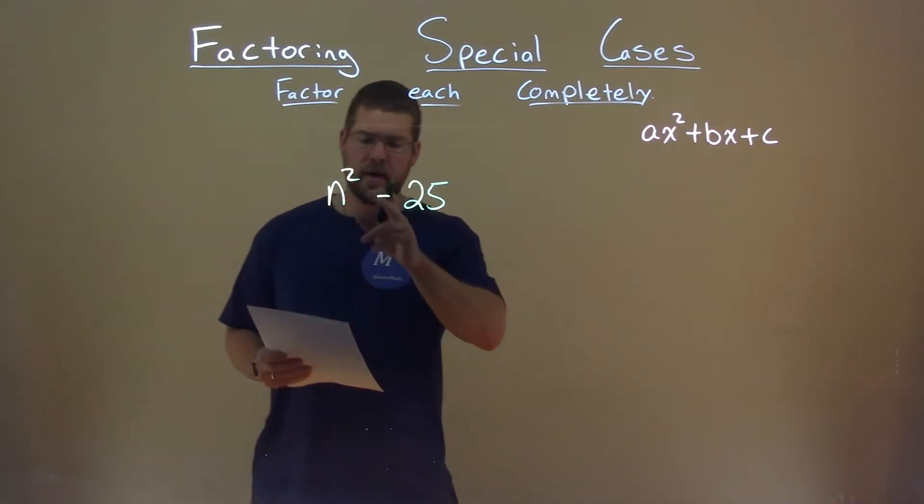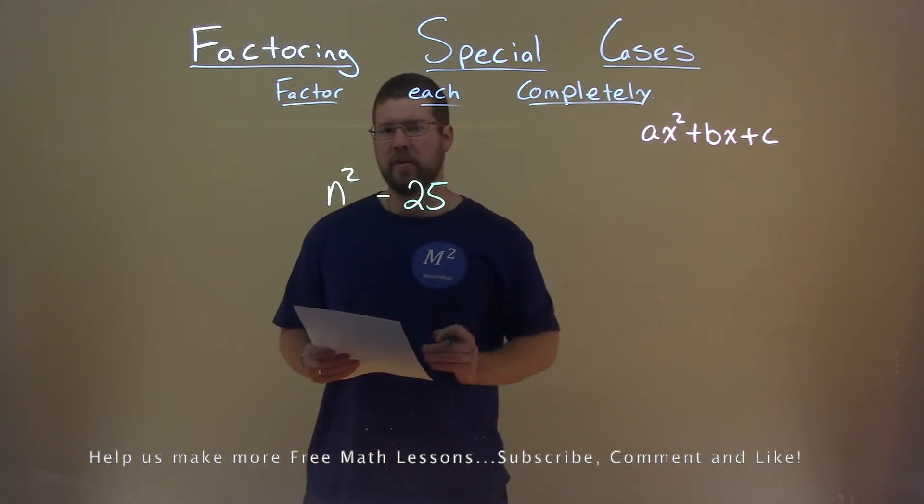We're given this problem right here, n squared minus 25, and we want to factor this completely.